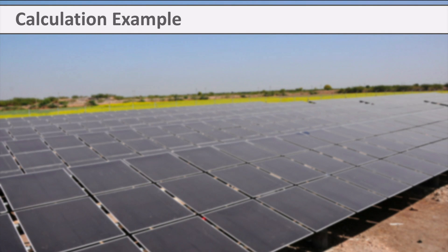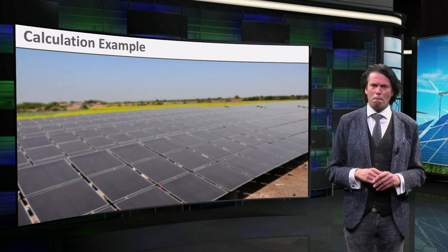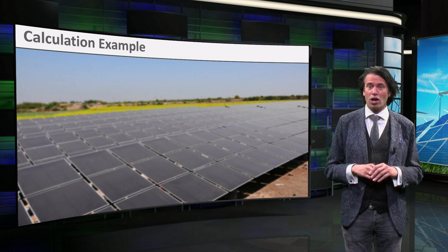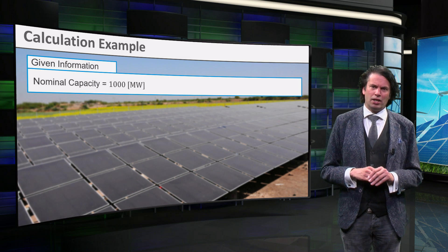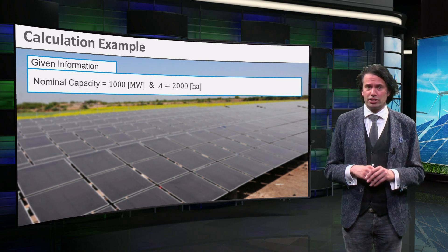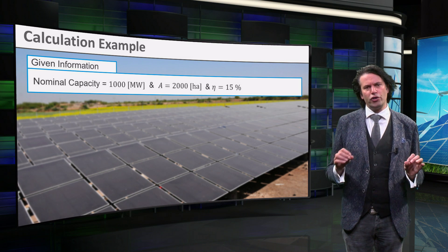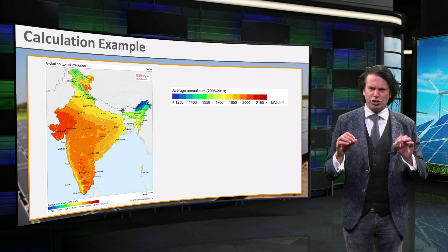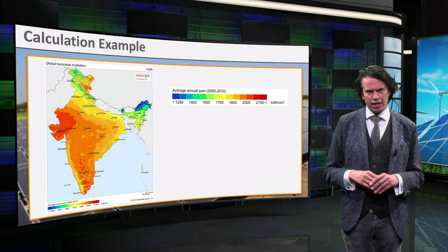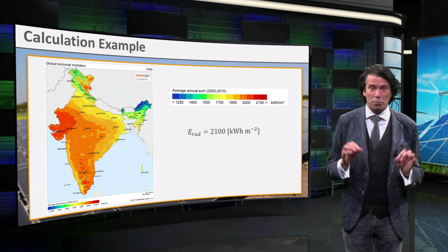In the following example, we want to calculate the energy yield and the capacity factor of the Gujarat Solar Park on the west coast of India. The Gujarat Solar Park is one of the largest combined solar farms in the world, consisting of around 84 large-scale projects with a combined nominal capacity of 1000 MW. The surface area of the farm is 2000 hectares, and we assume a moderate total PV system efficiency of 50 percent. Using a map showing average yearly solar irradiation, the park receives a yearly irradiation of 2100 kWh per square meter.